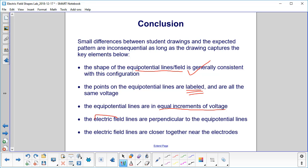The electric field lines, now we switch over to the field, they have to be perpendicular to the equipotential lines. And your electric field lines will be closer together near the electrodes.